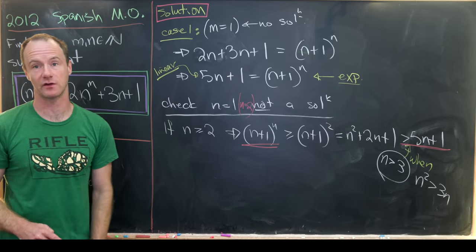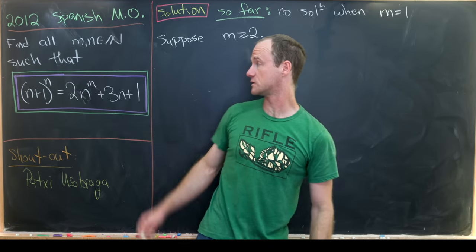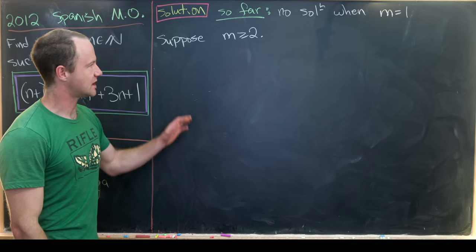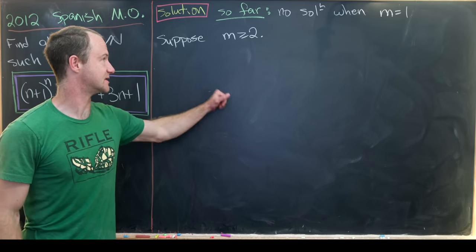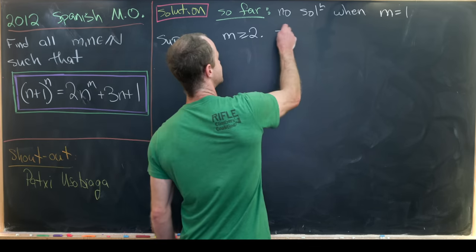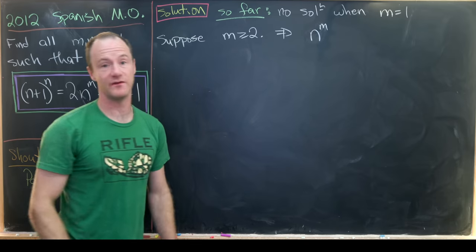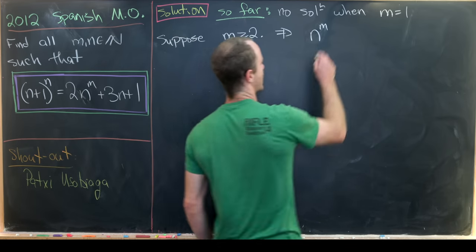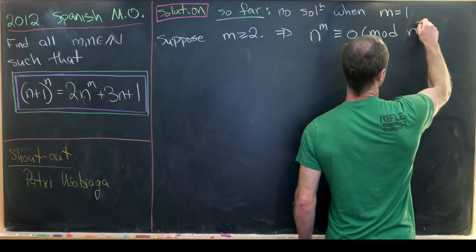which is when m is bigger than or equal to 2. So we just got done showing that in the case when m equals 1, there are no solutions to our given equation. So that means we'll move on to all of the rest of the cases, which is when m is bigger than or equal to 2. But notice if m is bigger than or equal to 2, that means that n^m is a multiple of n^2. But being a multiple of n^2 means that it's congruent to 0 modulo n^2.